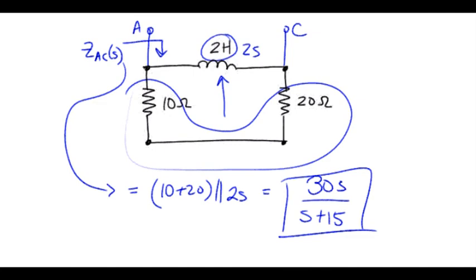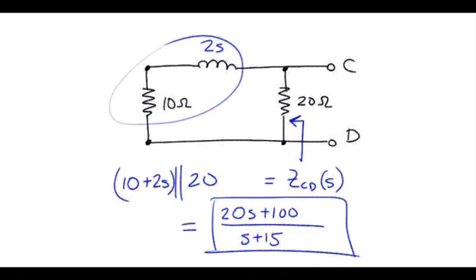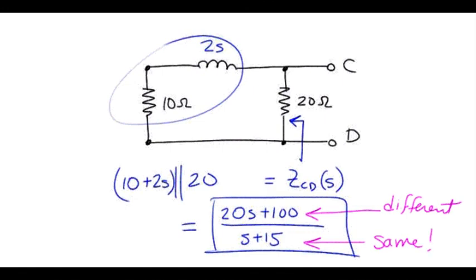Let's quickly scan through the results from all three parts to find a pattern. Looking carefully, you'll notice that the numerators are always different, while all of the denominators are the same. This indicates there's some inherent property of the circuit itself such that the denominator always stays the same, whereas depending on which set of terminals you look at, you get different numerators.